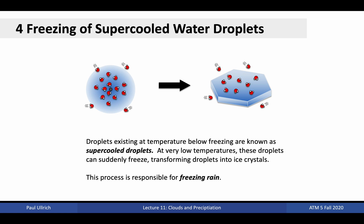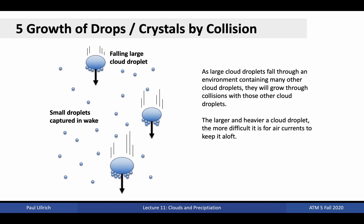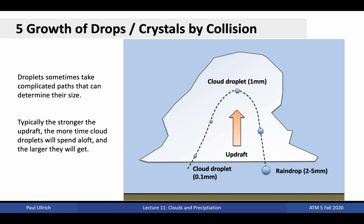Under certain conditions, liquid water droplets can exist even at temperatures below freezing. These are known as supercooled droplets and are common in mid-level clouds such as altocumulus. Precipitation of supercooled droplets also leads to freezing rain, as they quickly freeze on contact with the ground. Droplets can grow not only through molecular effects, but also through collision with other droplets and subsequent mergers. Once the droplets become too large to be held aloft by uplift, they begin to fall. Falling droplets sweep up smaller droplets captured in their wake, further building up droplet size. The path taken by droplets and crystals in a cloud can be quite complicated, as mergers and divisions occur. Typically, the stronger the updraft, the more time droplets are kept aloft, and so the more opportunity for those droplets to grow into larger droplets. Eventually, those larger droplets overcome the strength of the updraft and precipitate out.